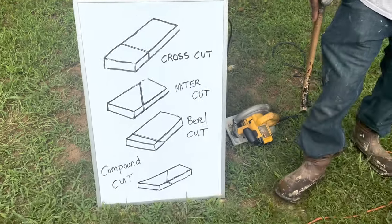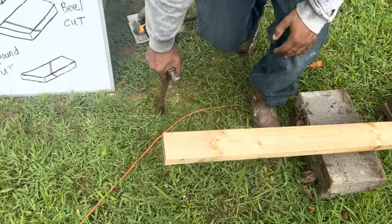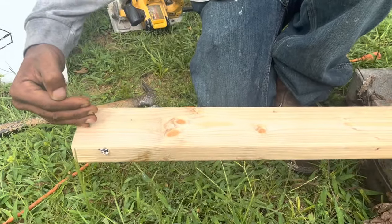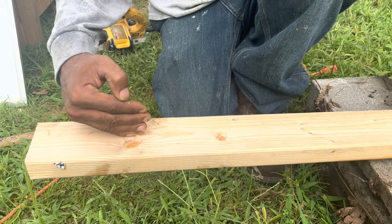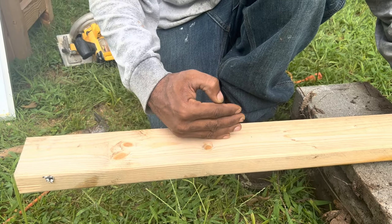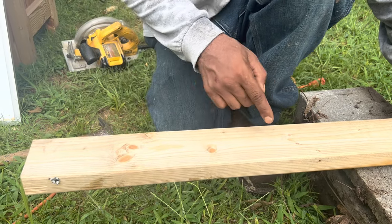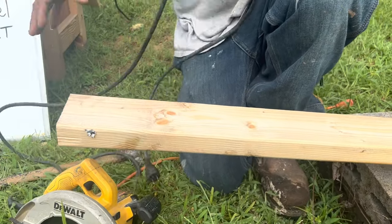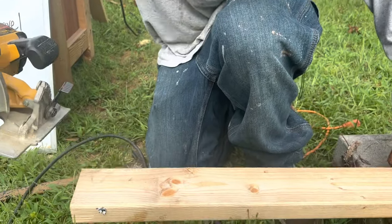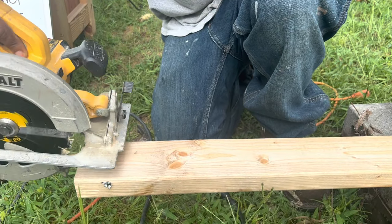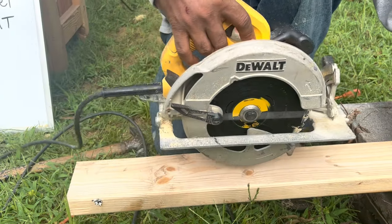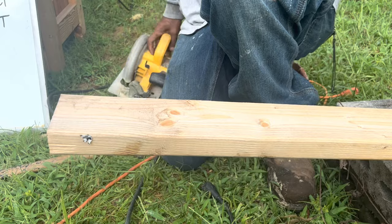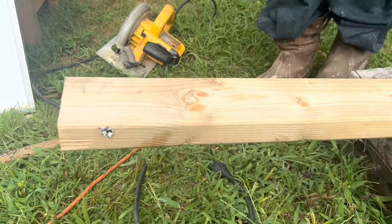Rip sawing is the fifth cut. Rip sawing is cutting the length of your board parallel to the wood grain. This saw is always unplugged right now. If you're gonna rip saw, you'll be cutting straight up like this. I'm not gonna demonstrate that right now, but I am gonna demonstrate a cross cut.